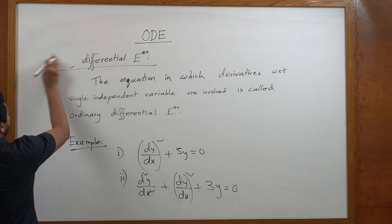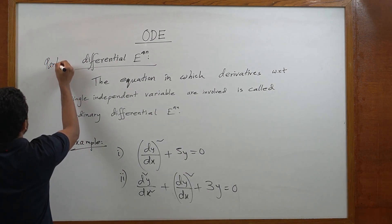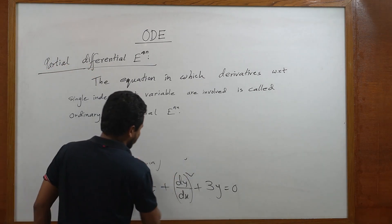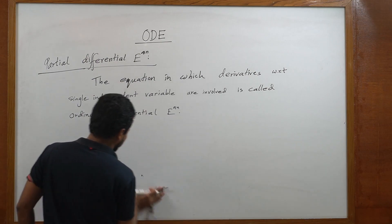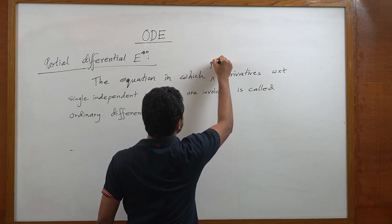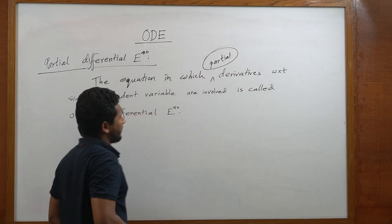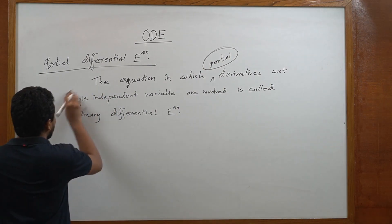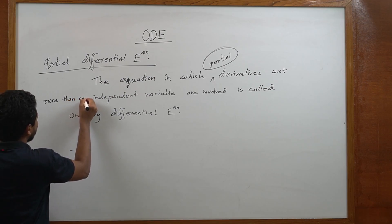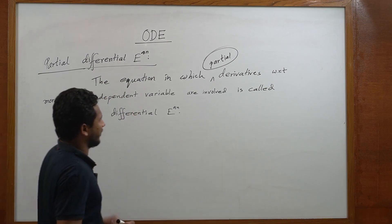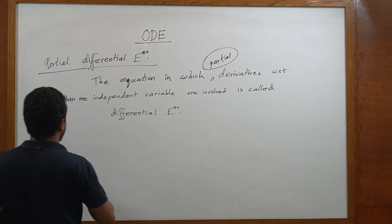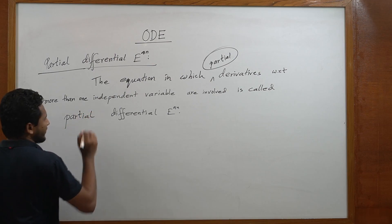Now we will go to the partial differential equation. The definition: the equation in which partial derivatives with respect to more than one independent variable are involved is called a partial differential equation.